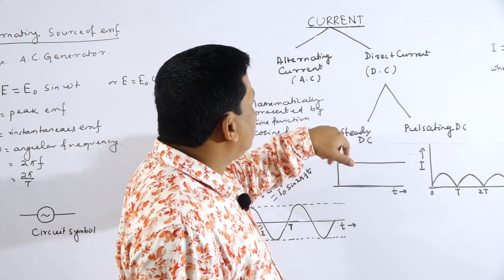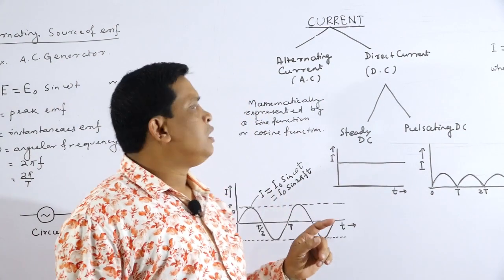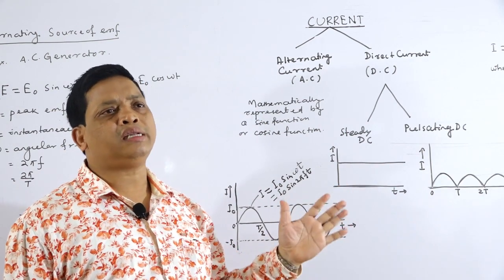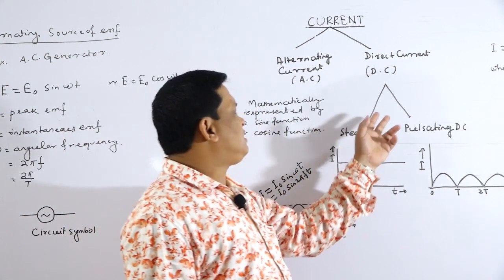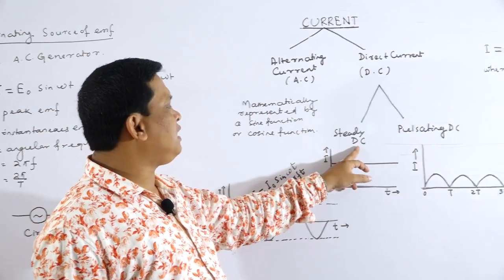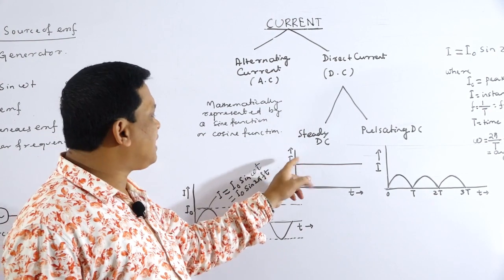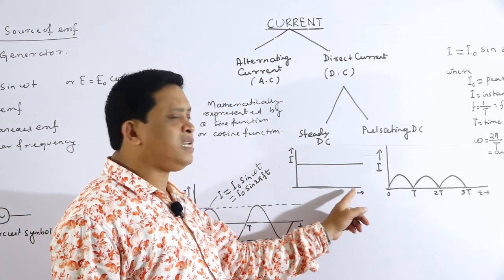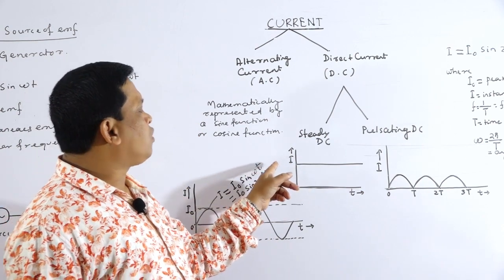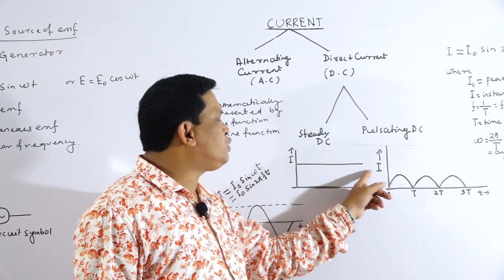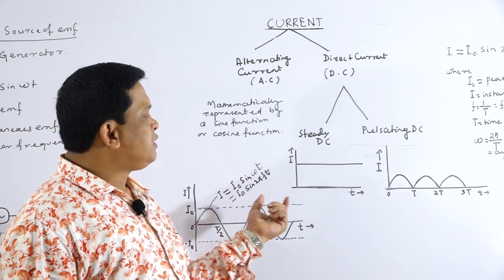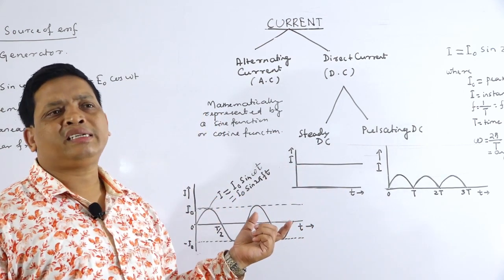Direct current is unidirectional current — unidirectional means direction does not change. DC is of two types: steady DC or constant DC. Looking at the graph with time along the x-axis and current along the y-axis, the current is constant — it does not change with time. This is called steady DC or constant DC, and this type of DC is obtained from a DC battery or a cell.